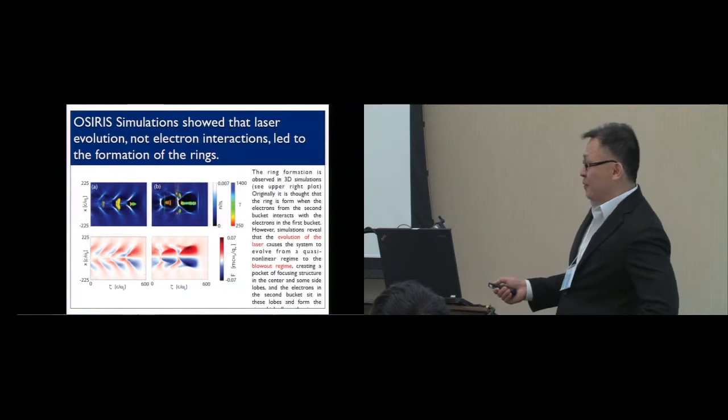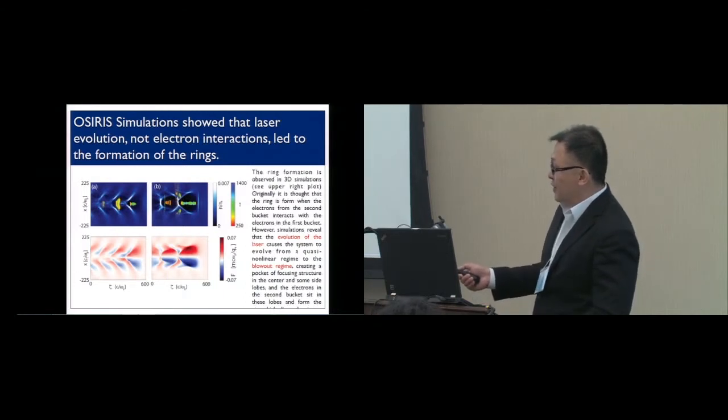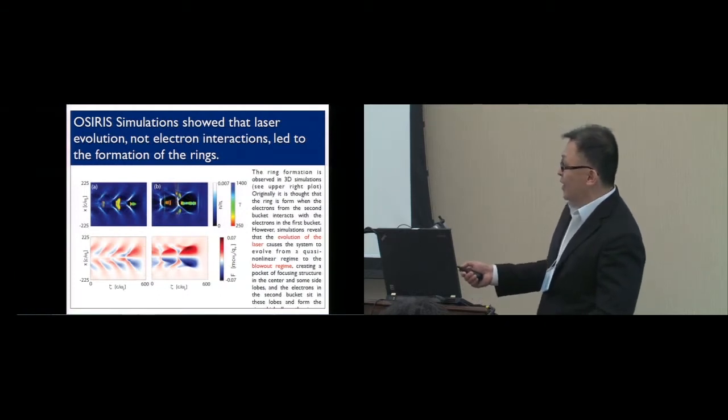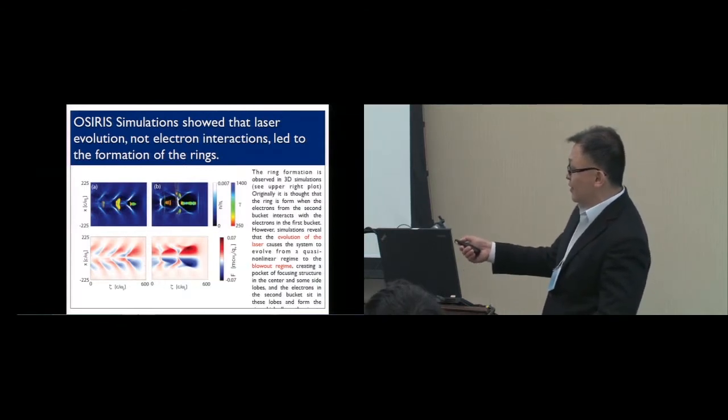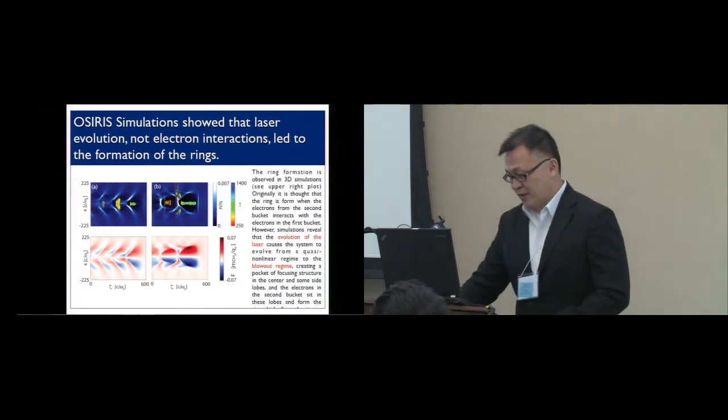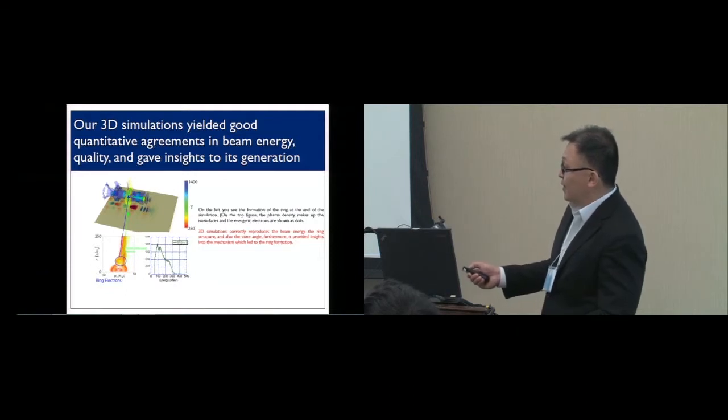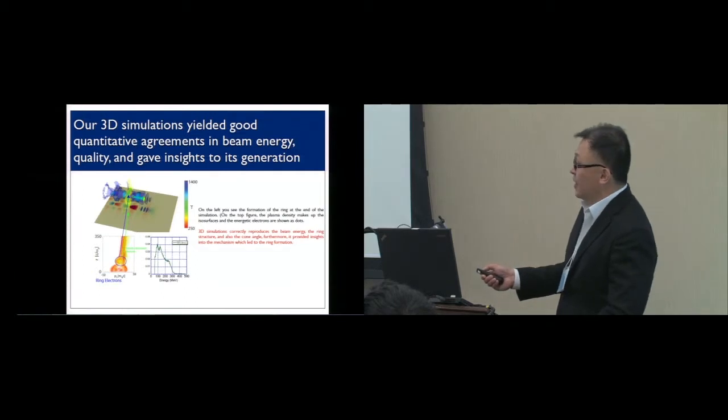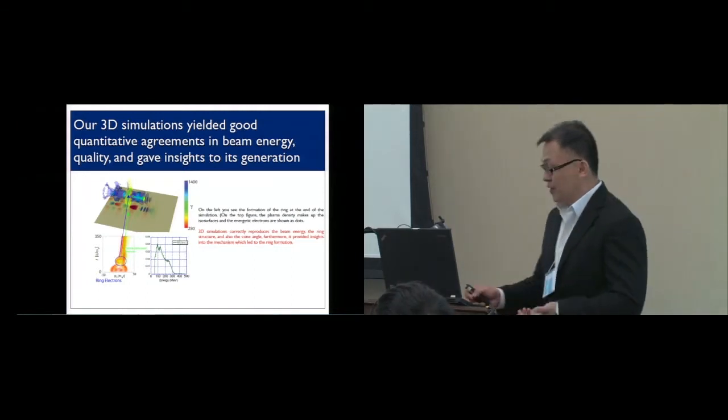In the second bucket, only the back half is focusing, but the front half is actually defocusing. The electrons come to the front of the second bucket. It's defocused due to the fact it's not in the blow-out regime. It splits apart. Then when it reaches the end of the simulation, when it's in the blow-out regime, it sits in the lobe where there's some focusing field. Part of these electrons are trapped, but most of them are defocused. That's very interesting. However, we get quantitative agreements between simulations and experiments. Here I'm plotting a 3D plot of the isosurface of the plasma and also showing the energetic electrons as dots. We get roughly the right energy and good agreement in terms of angular spread. Simulations provide insights as to the reasons that these rings are formed.